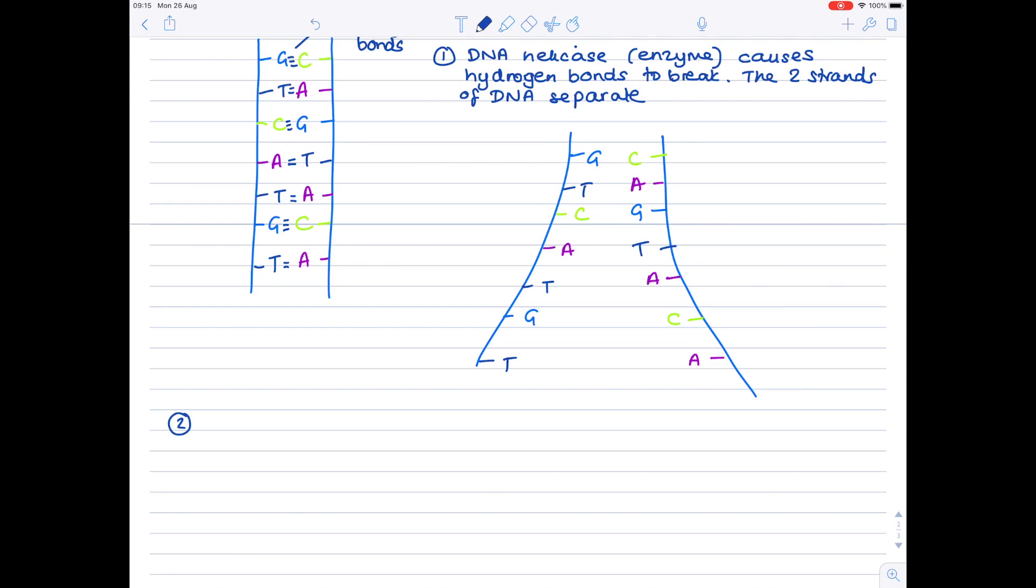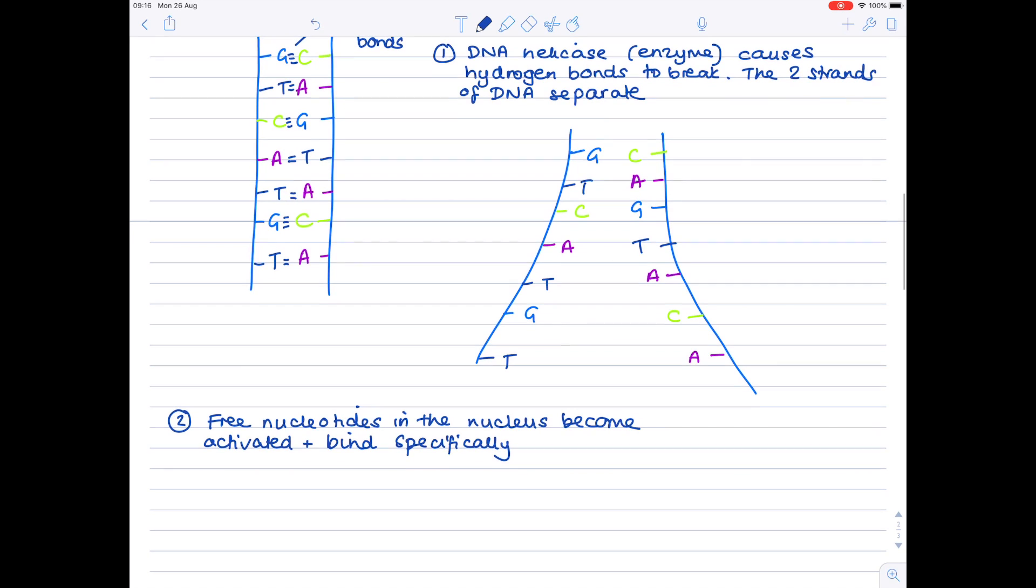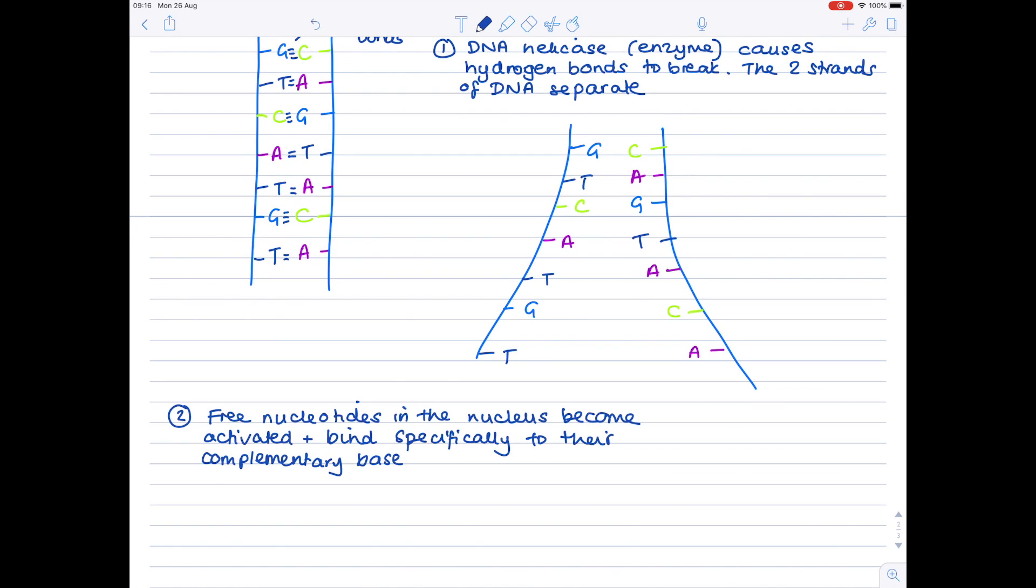Now that separation has occurred, there will be free nucleotides present in the nucleus which are activated and they can come and bind now to their complementary bases. Because we have exposed bases, we know those nucleotides can come and bind. So adenine would obviously bind to thymine, thymine would bond to adenine, cytosine would bond to guanine, and guanine would bind to cytosine. Hopefully you can see that here we've got two mini DNA strands forming.